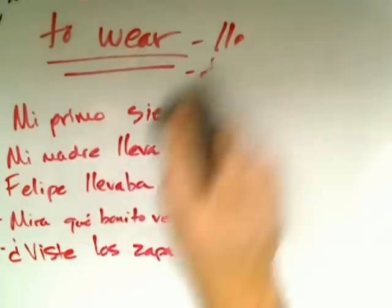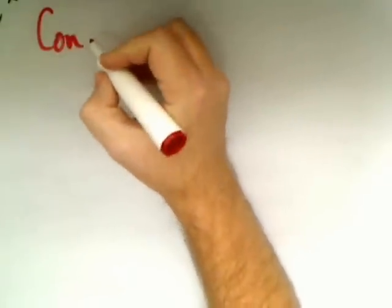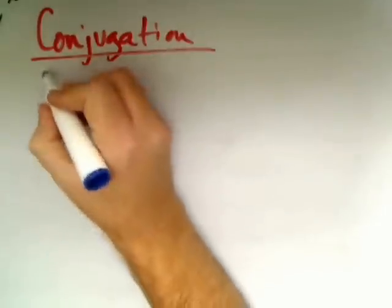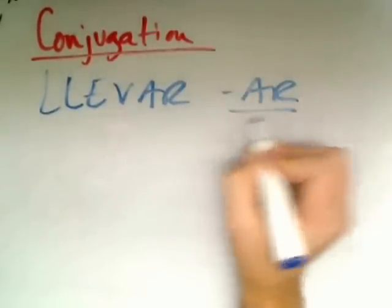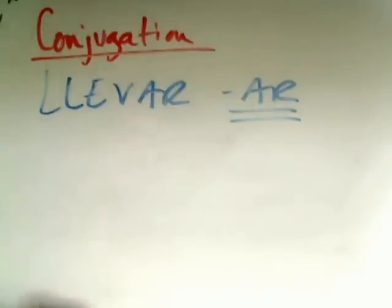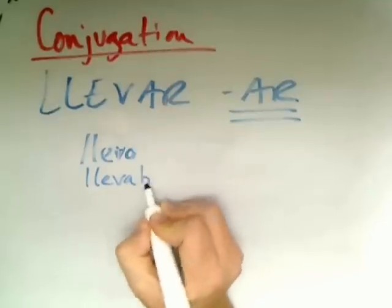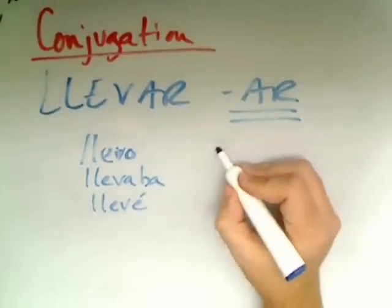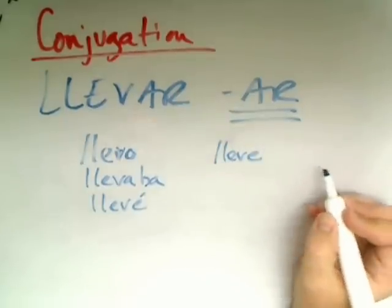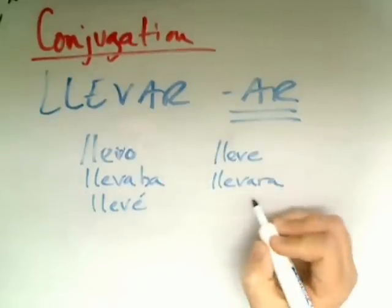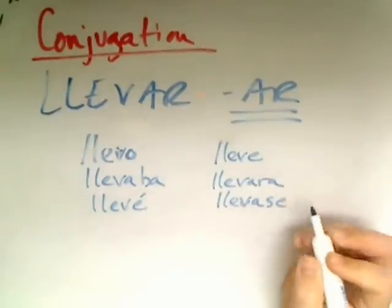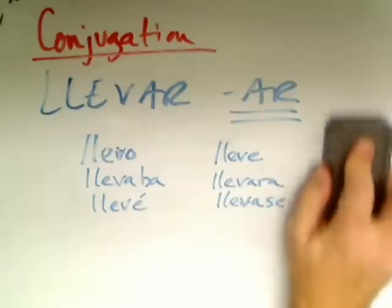Those are three key uses of llevar and traer where they are more or less interchangeable — much less so when it comes to bring versus take. Now let's point out a couple of things on the conjugation of these two verbs. Llevar is a regular AR verb in all tenses — llevar es muy fácil de conjugar. It's going to be regular in all tenses. Just showing some yo forms: llevo, llevaba, lleve — present subjunctive — llevara or llevase for the imperfect subjunctive. Llevar follows the regular AR patterns in all tenses.